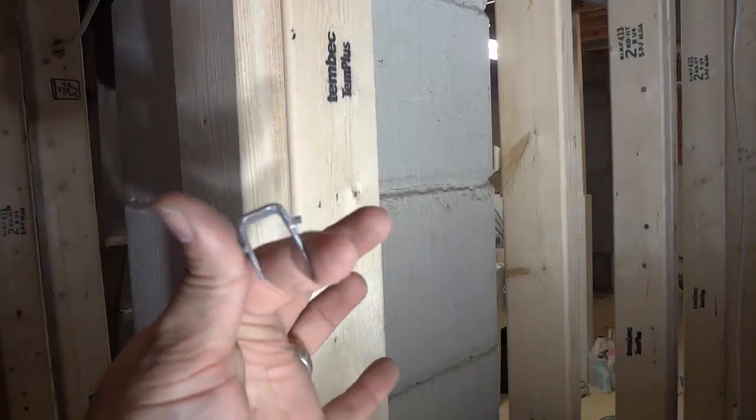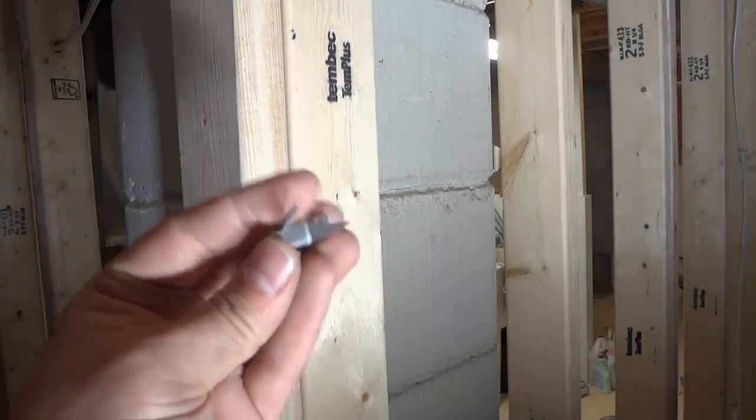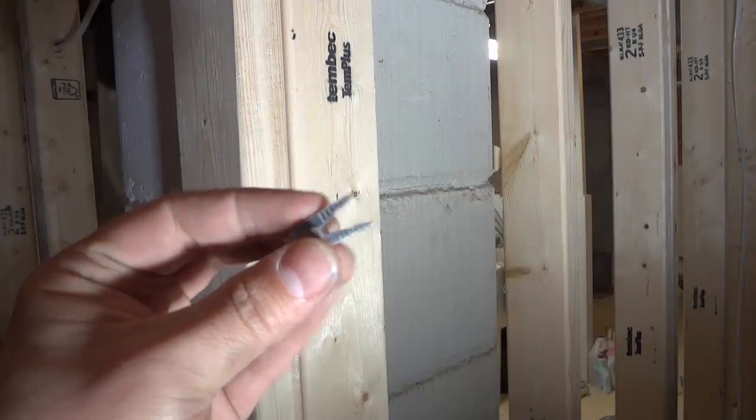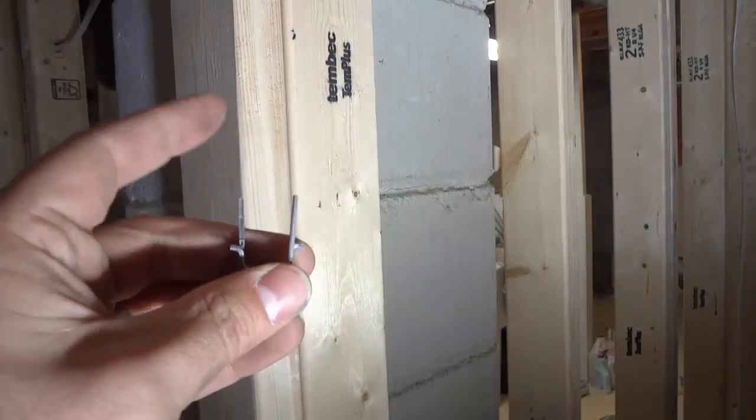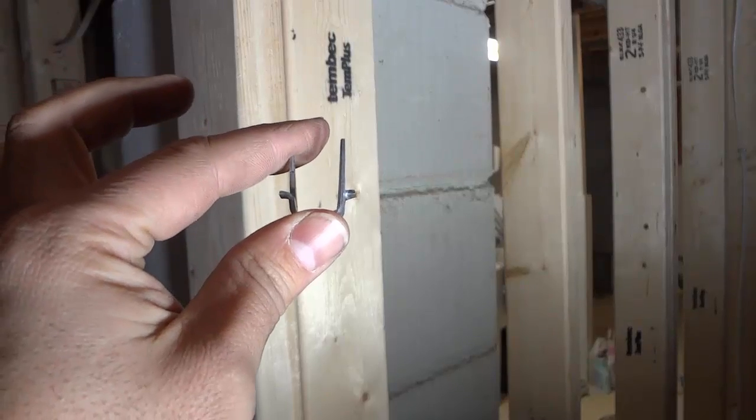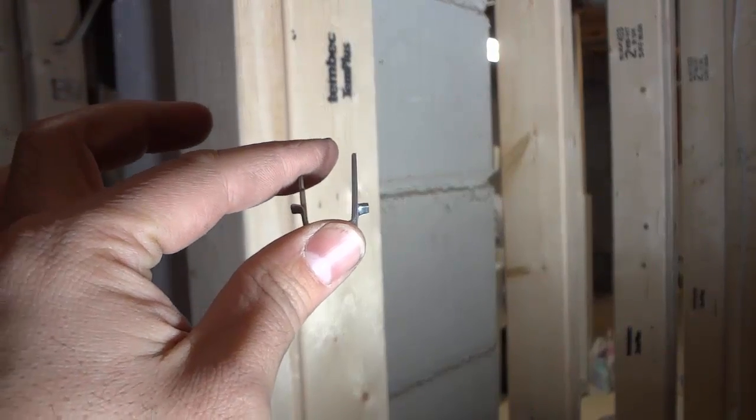This right here is an example of a wiring staple. As you can see it's pointy on this side right here and then it has these tabs on both sides to make sure that you know when to stop hammering it in place.